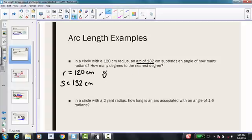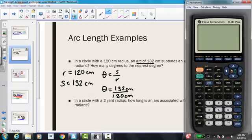So our equation is theta equals s over r. Again, we need to make sure that both s and r are in the same units, and they are, they're both in centimeters. So we have theta equals 132 cm over 120 cm. Putting this into my calculator, 132 divided by 120, I get 1.1.